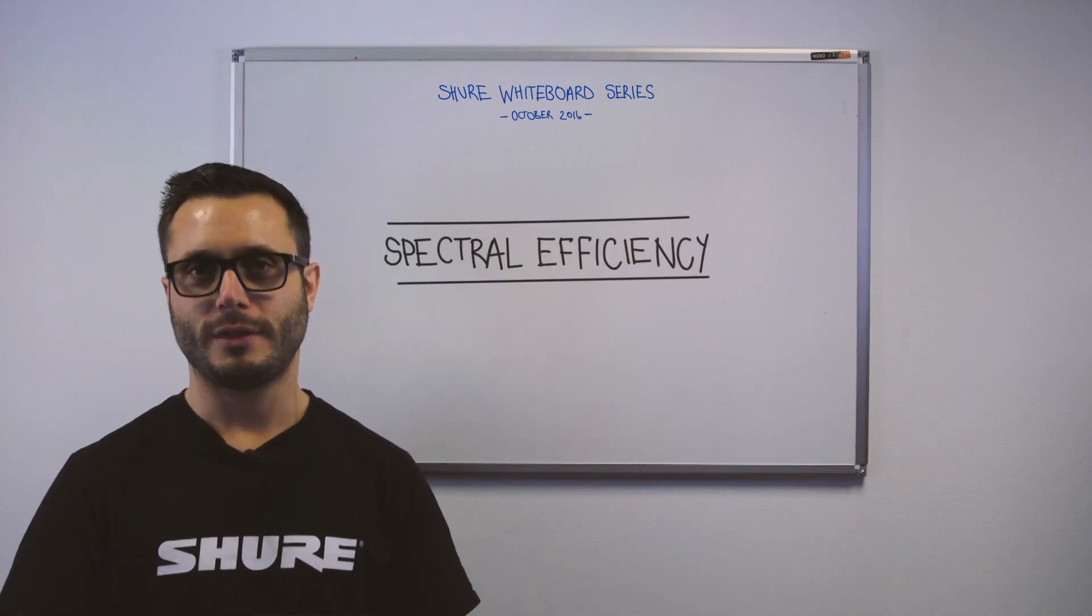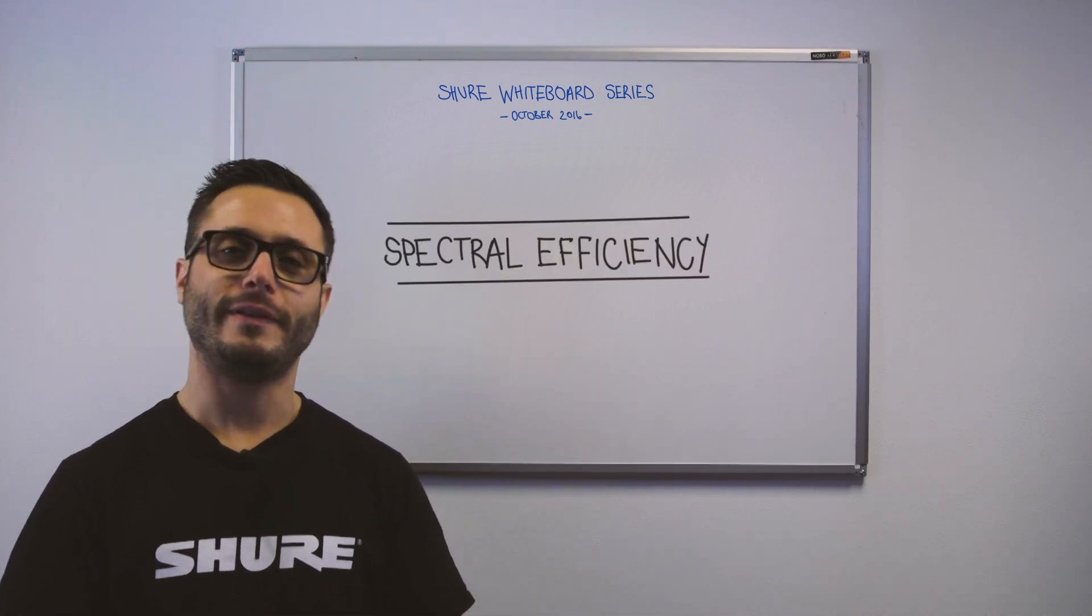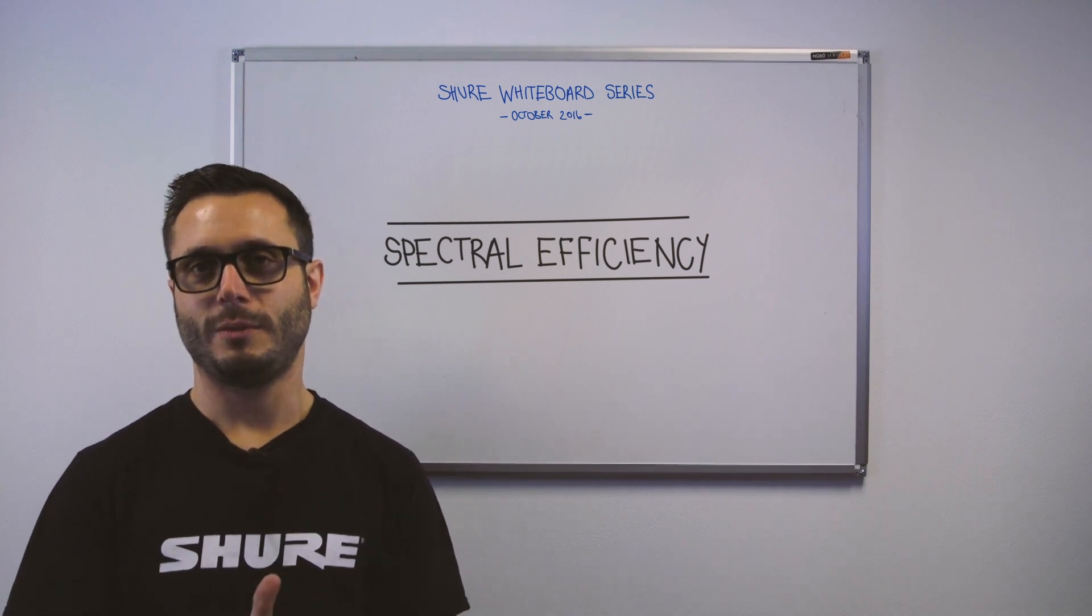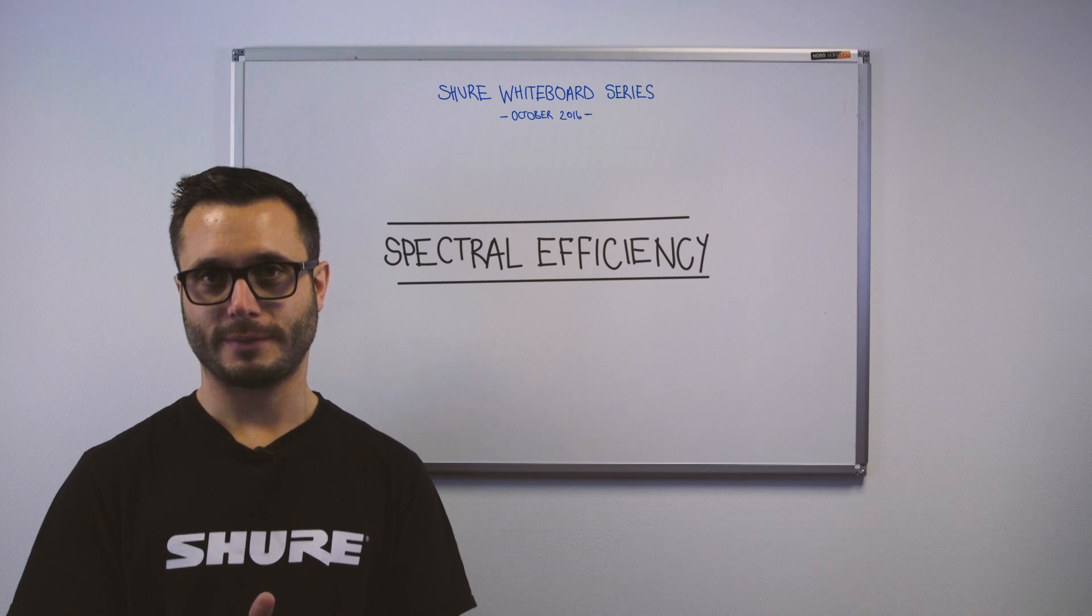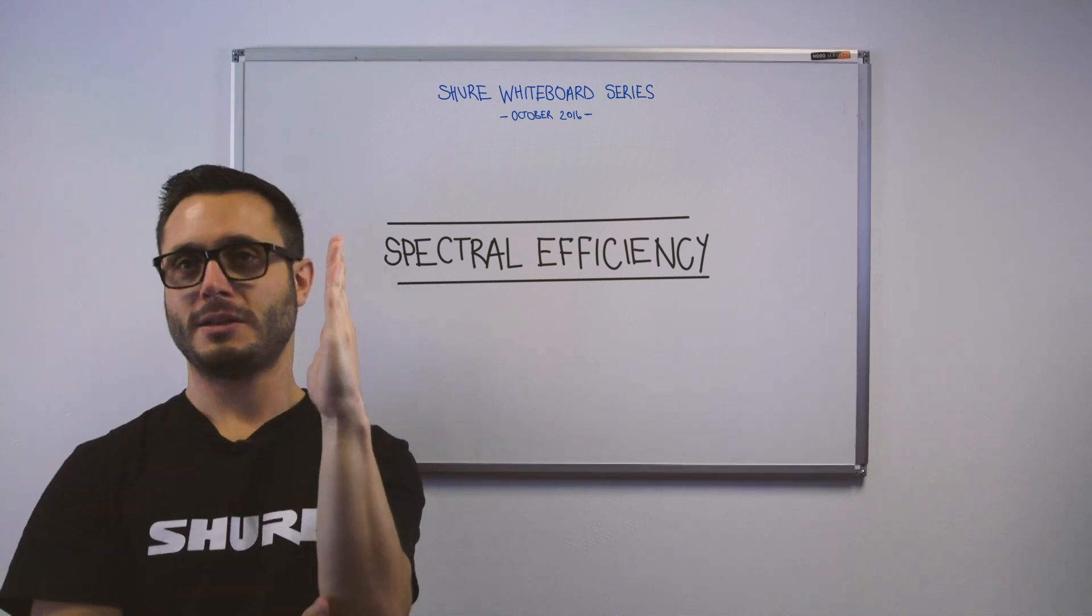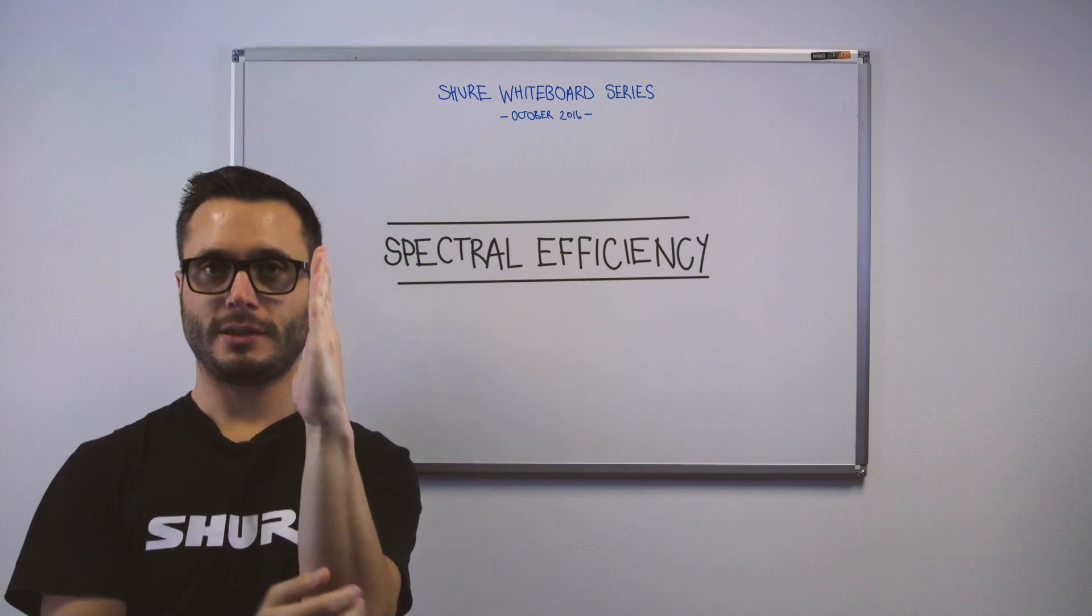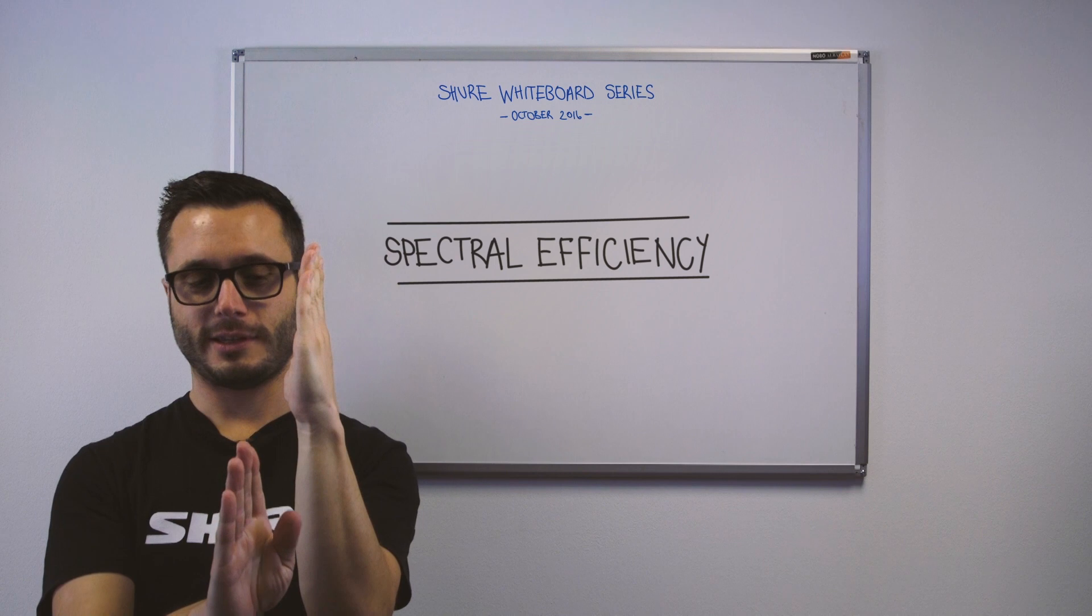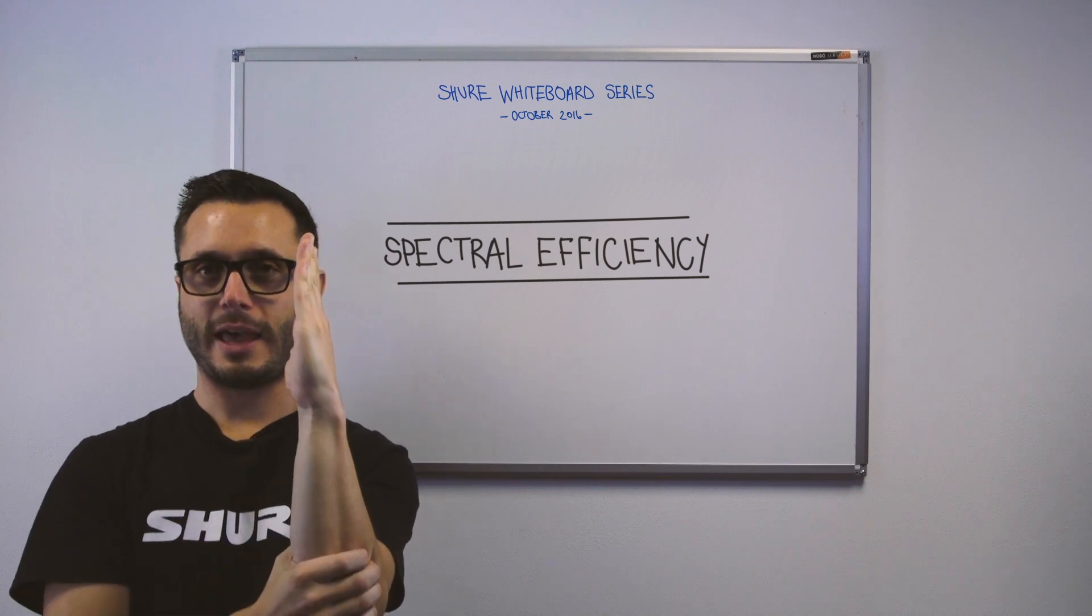The second main thing with digital radio microphones that they have over analog is their spectral efficiency. Now, this comes down to the way that frequency modulation works. If you start with a single frequency on air oscillating at, say, 610 megahertz, with no audio going into that radio microphone for an analog system, this frequency will just sit there as it is.